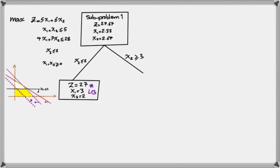Is there a way to get anything better than 27? Looking at the relaxed problem, the maximum we reached was 27.67, meaning the best possible integer objective value we can achieve is 27 — and we already found that. However, for the sake of understanding how the full branch and bound process works, I'll follow along the other branch to see how we confirm x1 = 3, x2 = 2 as the optimal solution. For now, we call it a lower bound, assuming there might be another solution that beats it.